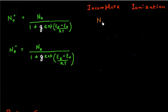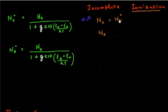So we now know, given a certain amount of donor and acceptor atoms in my semiconductor, how to calculate the number of electrons and holes. We did that in one of the previous videos. But one of the assumptions we made in deriving this was that I assumed complete ionization of these dopants — that is, if I add a certain number of donors, all of them ionize, and the number of ionized donor atoms equals the number of donor atoms I added. Similarly for acceptors.